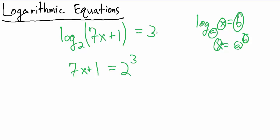The 3 is the thing on the other side of the equation. So the thing inside of the log equals the base raised to the thing on the other side of the equation. So 7x plus 1 equals 2 cubed. 2 cubed is just 8, so this is 7x plus 1 equals 8. Subtract 1 from both sides and we get 7x equals 7, and divide both sides by 7, and we get x equals 1.